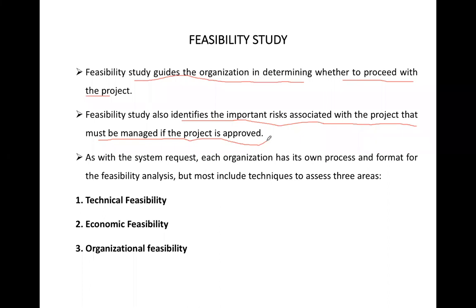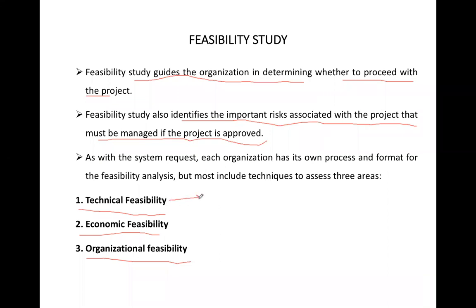The feasibility study is basically divided into three categories: technical feasibility, economic feasibility, and organizational feasibility. In technical feasibility, we will define technical aspects — what technology we use and whether we are familiar with it and can do real work with that technology.